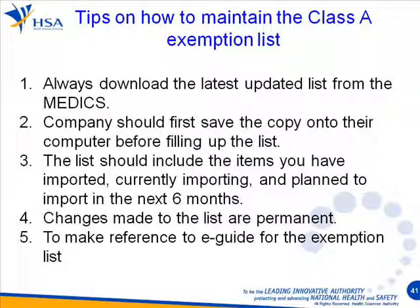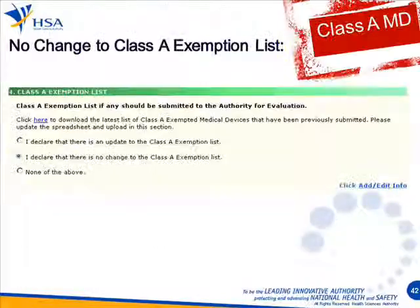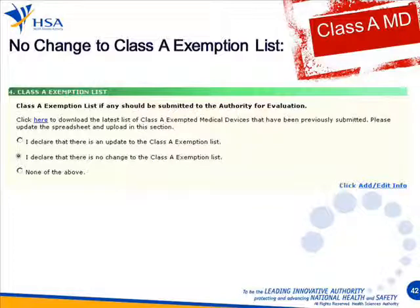If you are unsure, always have the e-guide next to you. The e-guide will give you a step-by-step procedure on how to submit, how to correct, and what to do when you are stuck — make good reference of that. And if you have a renewal with no changes to your existing Class A exemption list, you don't have to update the form. Just click 'I declare that there are no changes to my Class A exemption list' and then proceed.